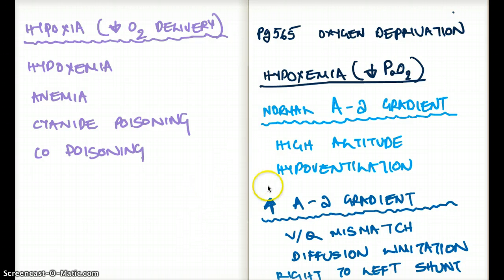Okay, now let's talk about, you know, there is normal A-a gradient, and there is increased A-a gradient under hypoxia. What are the normal A-a gradient? Those is going to be high altitude and hypoventilation.